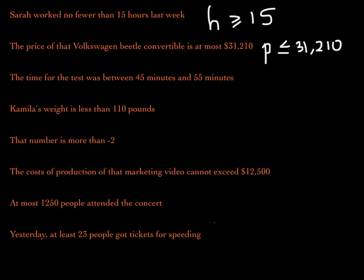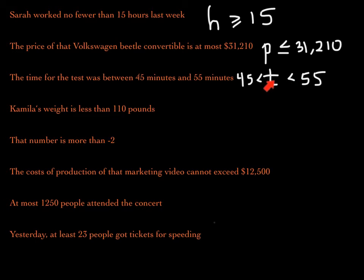The time for the test — let's use the variable T for time. The time for the test was between 45 and 55 minutes. So the time was greater than 45 but less than 55. You see two inequality symbols here. Reading left to right, time is less than 55; reading right to left, time is greater than 45. So the time is greater than 45 minutes but less than 55 minutes.